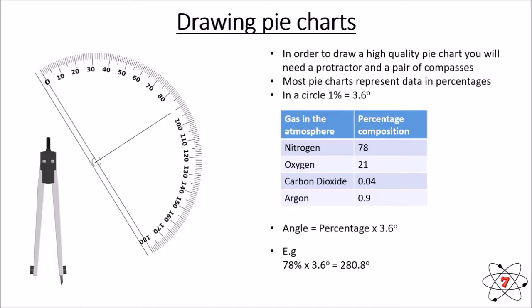So, for example, with nitrogen, 78 percent, which is the composition of the atmosphere, times 3.6, which is the value for 1 percent, equals 280.8 degrees. So, when we draw our pie chart for nitrogen, the pie for nitrogen needs to take up 280.8 degrees of our circle.